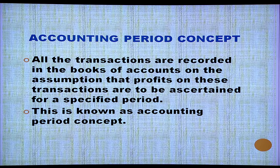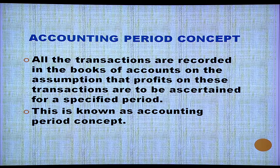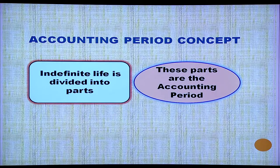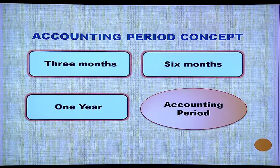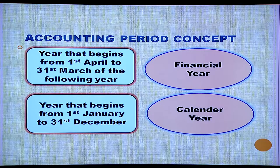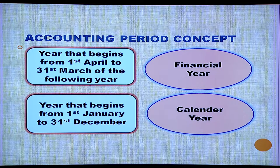Next is the Accounting Period Concept. All transactions are recorded in the books of accounts on the assumption that profits on these transactions are to be ascertained for a specific period — this is known as the Accounting Period Concept. The indefinite life of the business is divided into different parts known as accounting periods, which can be 3 months, 6 months, or 1 year. The year from 1st April to 31st March is the financial year; January 1st to 31st December is the calendar year.